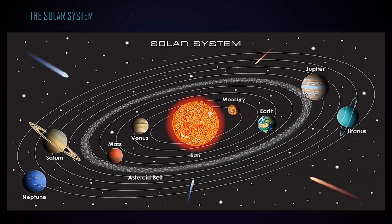We have Mercury, Venus, Earth, Mars, Jupiter, Saturn, Neptune, and Uranus. Pluto is not added as a main planet — it's a dwarf planet. So basically there are eight main planets, and there are also minor planets.